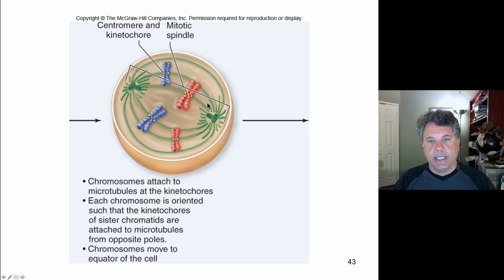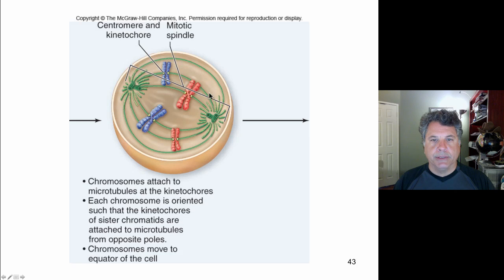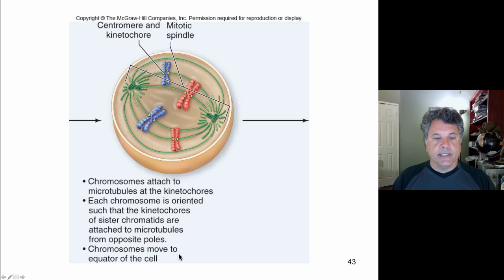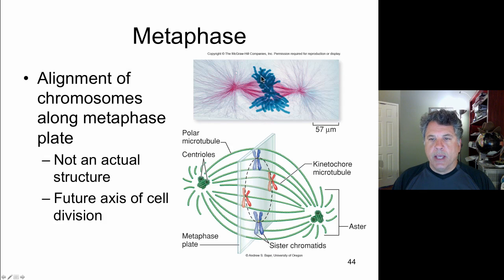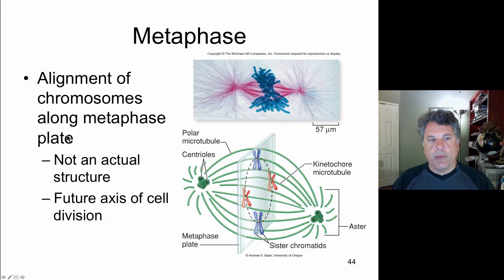There are astral microtubules — 'astral' meaning star-like. Polar microtubules extend the length of the cell, even past the middle, from each pole. Kinetochore microtubules attach to kinetochores. In prometaphase, chromosomes move to the equator of the cell. In metaphase, the chromosomes align on what we call the metaphase plate — an imaginary plane of alignment in the middle of the cell, not a physical structure.